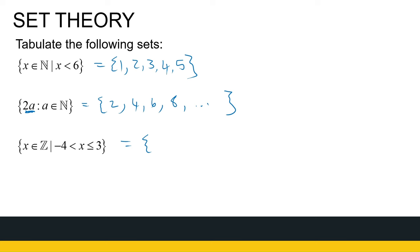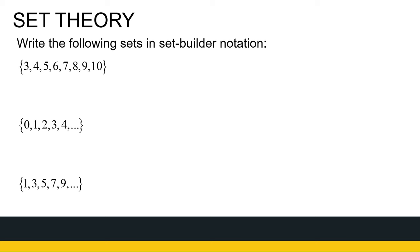All the integers between minus four and three. So what's the first integer? Minus four is not included, so it's going to be minus three, minus two, minus one, zero, one, two. Is three included in the set? Yes, because it said less than or equal to. So that's tabulating sets that are in set builder notation.